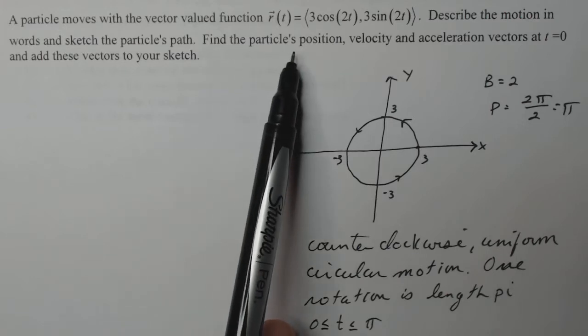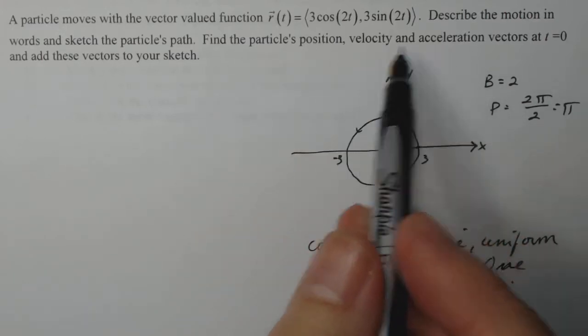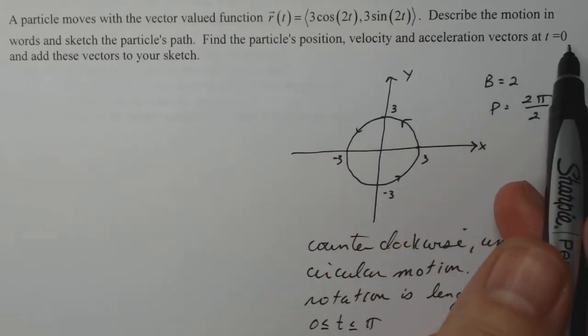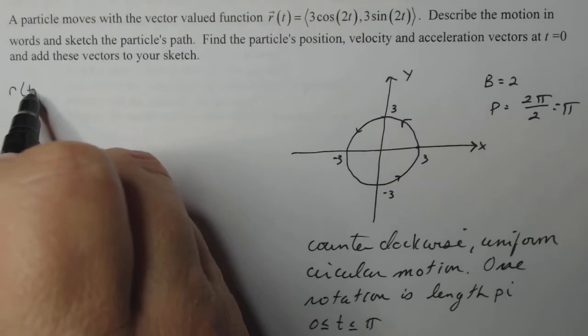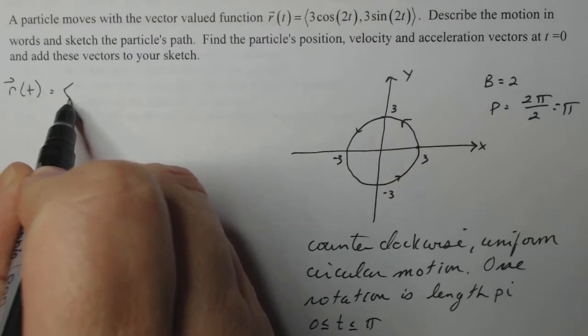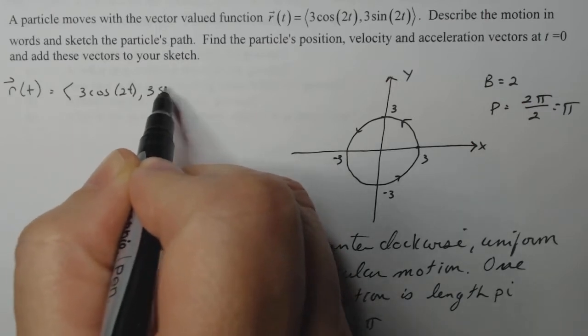Now I have to find the particles position, velocity and acceleration. I need to find those vectors at t equals zero. So I know my position vector at any time t is given by this function, 3 cosine 2t and 3 sine 2t.